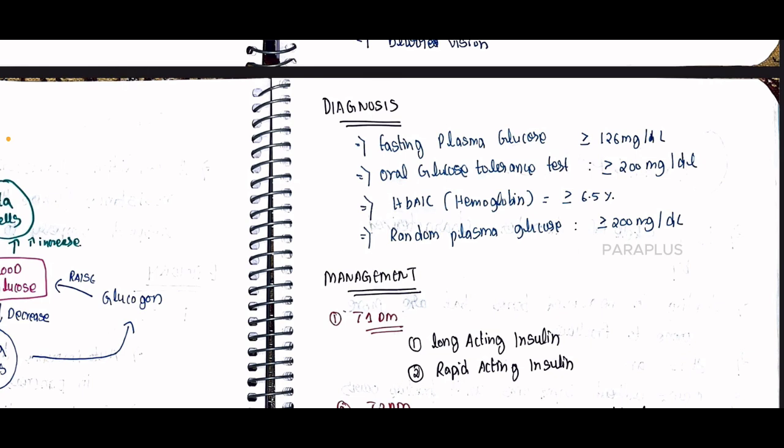For diagnosis: Fasting Plasma Glucose greater than or equal to 126 mg/dL. Oral Glucose Tolerance Test greater than or equal to 200 mg/dL. The gold standard test is HbA1c, which is greater than or equal to 6.5%. Random Plasma Glucose of 200 mg/dL or more is also used.